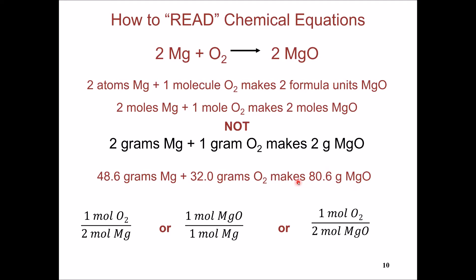What we get is a mole-to-mole ratio between the species, which is the ratio between the coefficients of each substance in the reaction. The ratio between magnesium and oxygen is one mole of oxygen to two moles of magnesium; magnesium to magnesium oxide is two to two, or one to one. Between oxygen and magnesium oxide, it is one mole of oxygen to two moles of magnesium oxide.